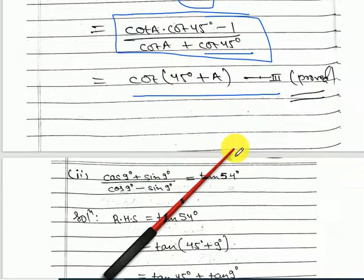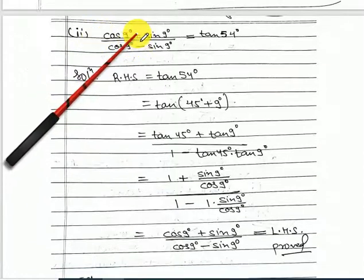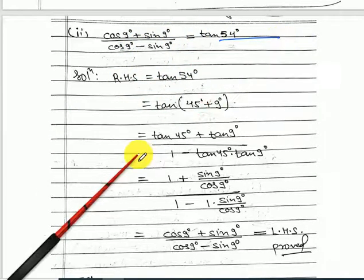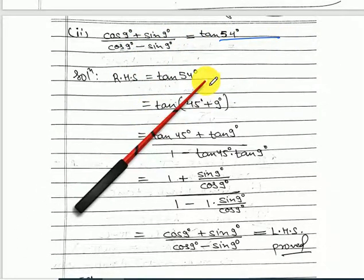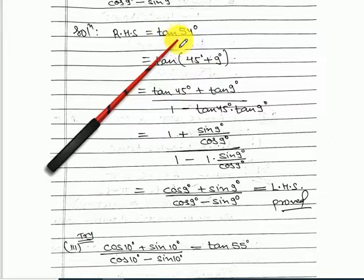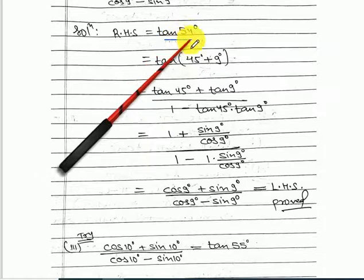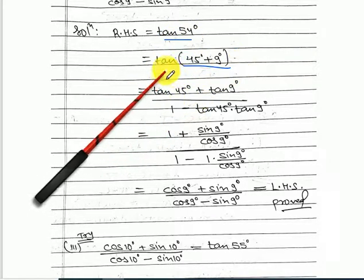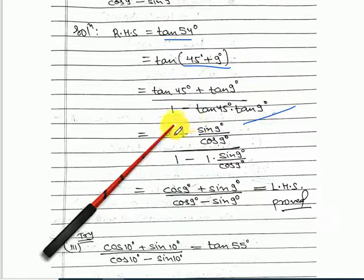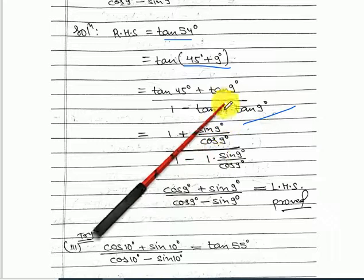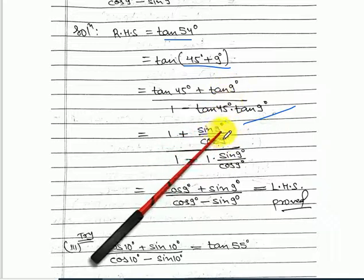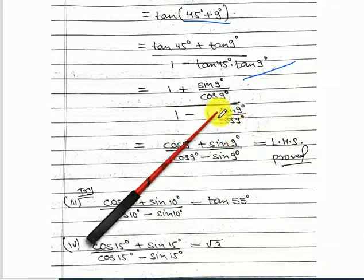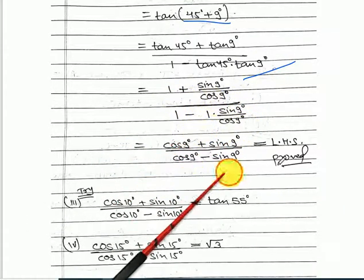Next: prove that (cos 9 plus sin 9) upon (cos 9 minus sin 9) equals tan 54. Start with the right hand side: tan 54 equals tan(45 plus 9). Use the formula for tan(A plus B). tan 45 equals 1. Write tan 9 as sin 9 upon cos 9 in numerator and denominator. Take the LCM, simplify, and you get the left hand side.